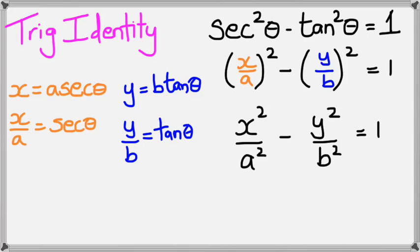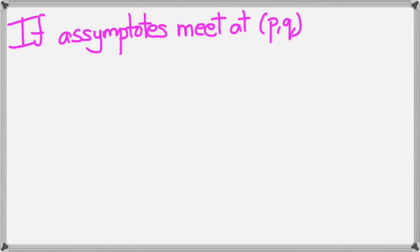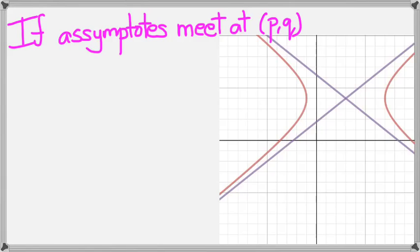Okay, moving on. Now with the circles and the ellipse, we were looking at the center point, but obviously, with hyperbolas, we'll be looking at the point where the asymptotes meet. So let's say we're looking at what if the asymptotes meet at pq. Let's check that as p, and that is q.